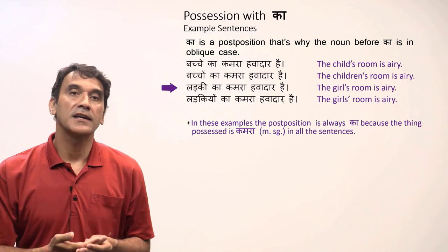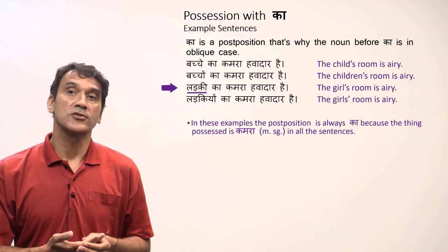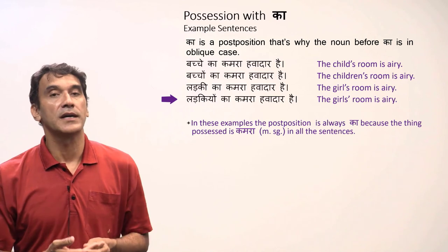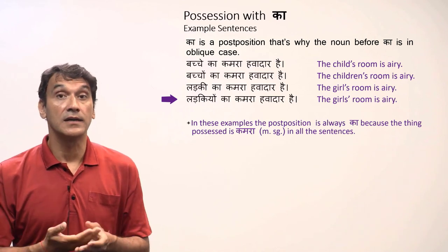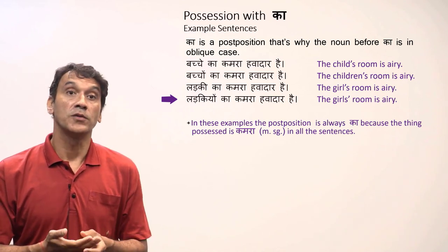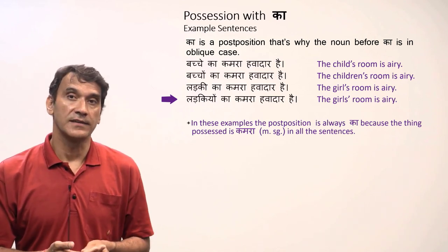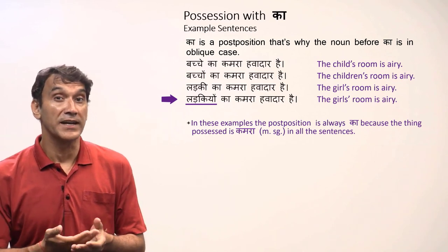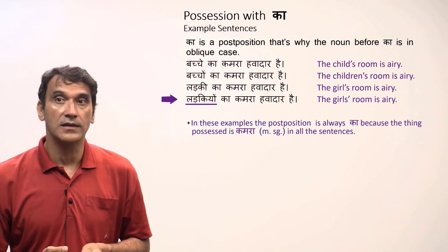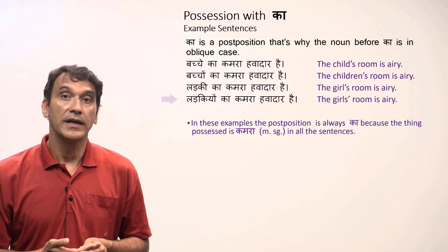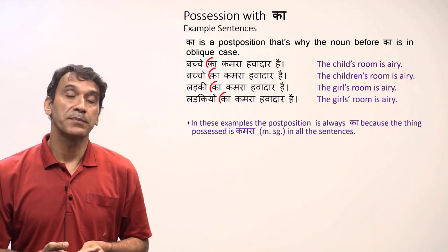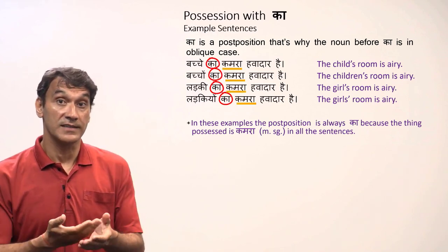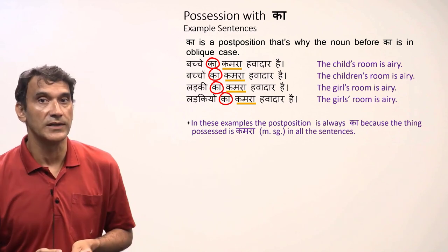Ladkiyon ka kamra hawa dar hai — The girls' room is airy. 'Ladkiyon' is the plural form used with the post position. In all these examples, the post position 'ka' is used because the thing possessed — 'kamra' (room) — is masculine singular.